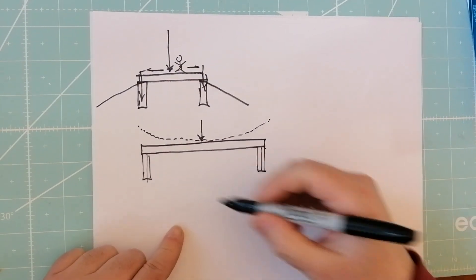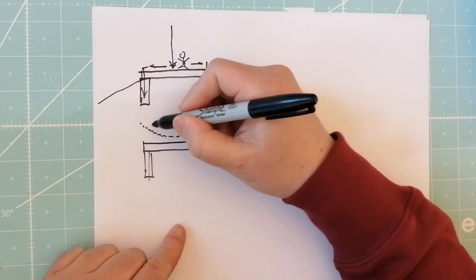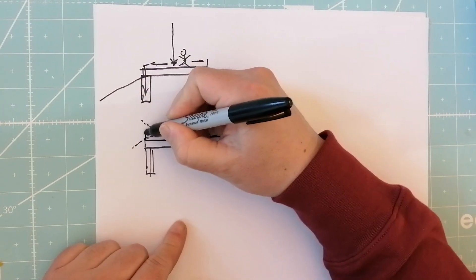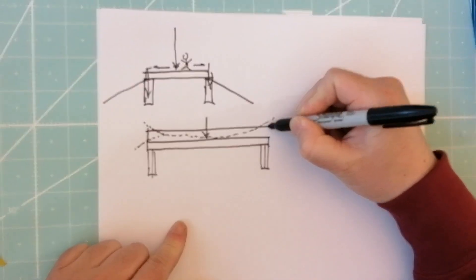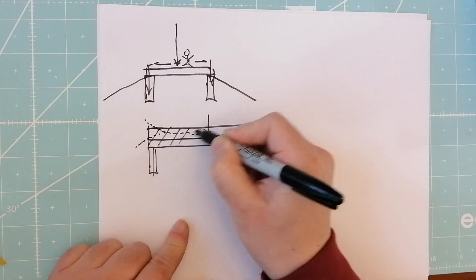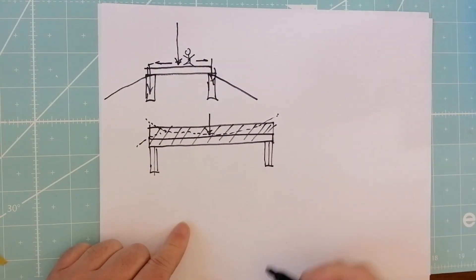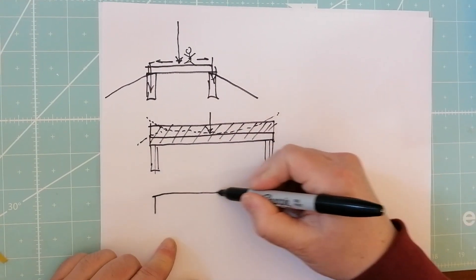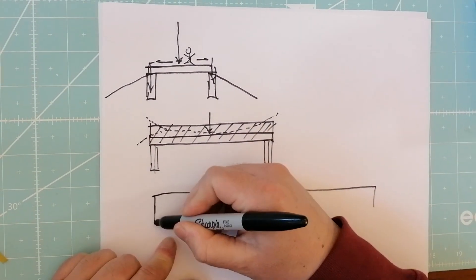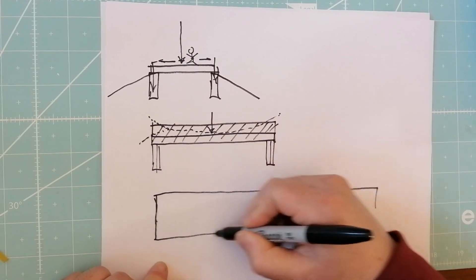So in order to counteract deflection, you're going to need to increase the size of the beam. So what do you do when the distance is so long? You have to build a really, really big beam to keep the deflection down.